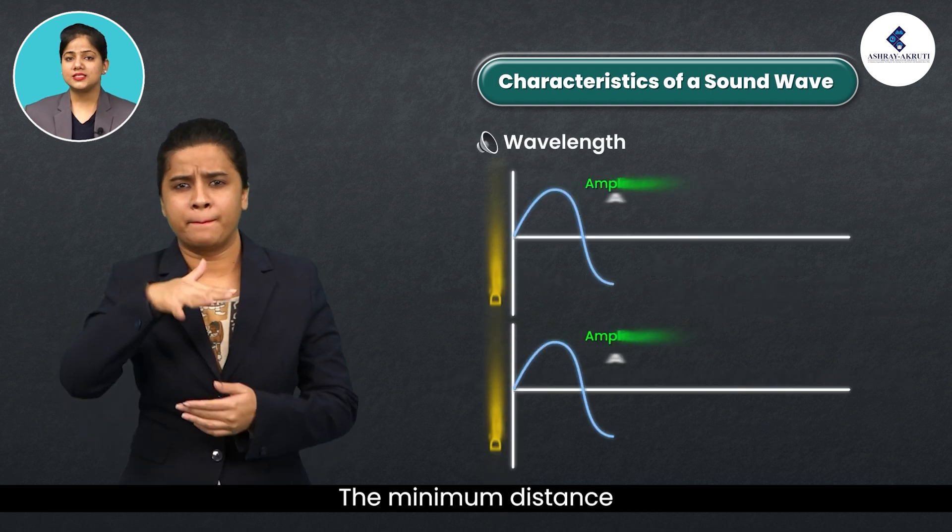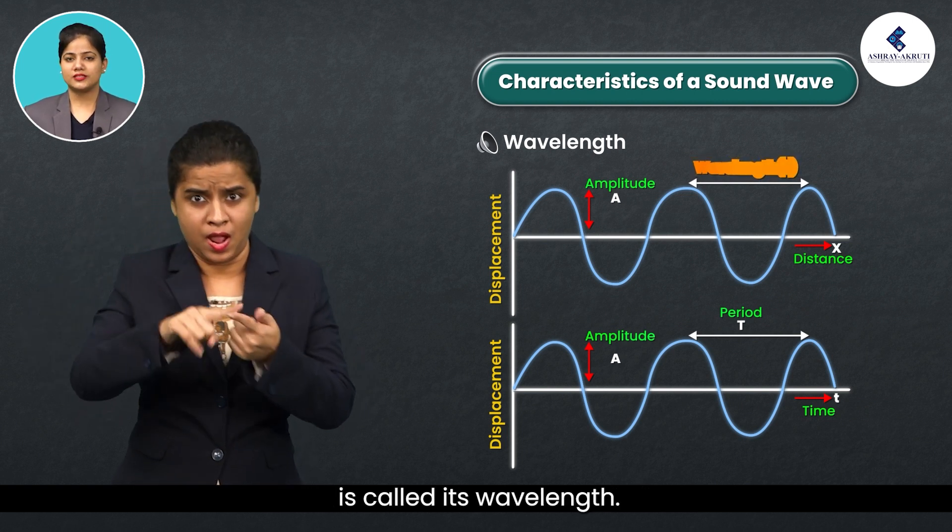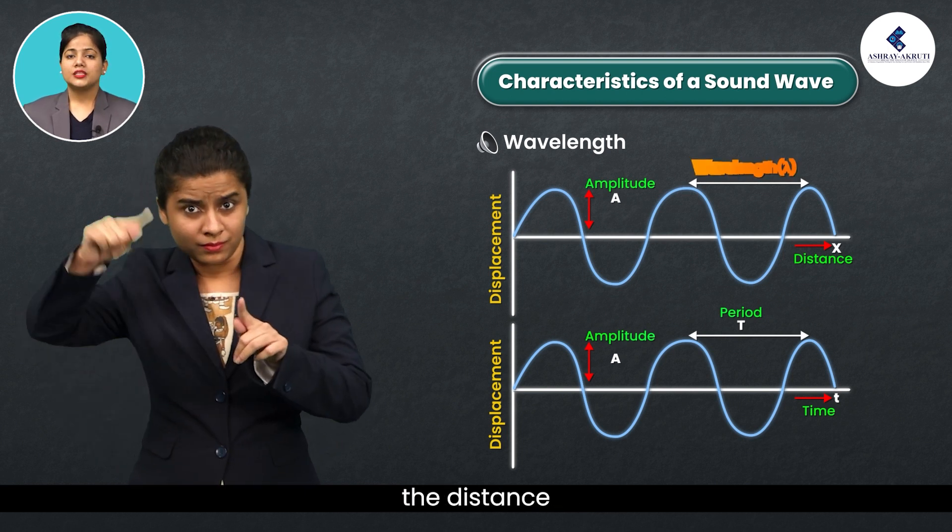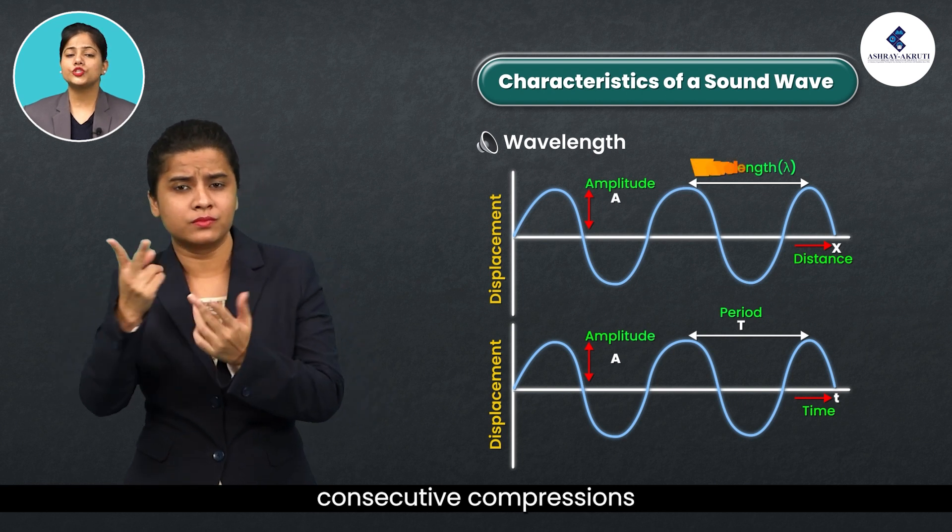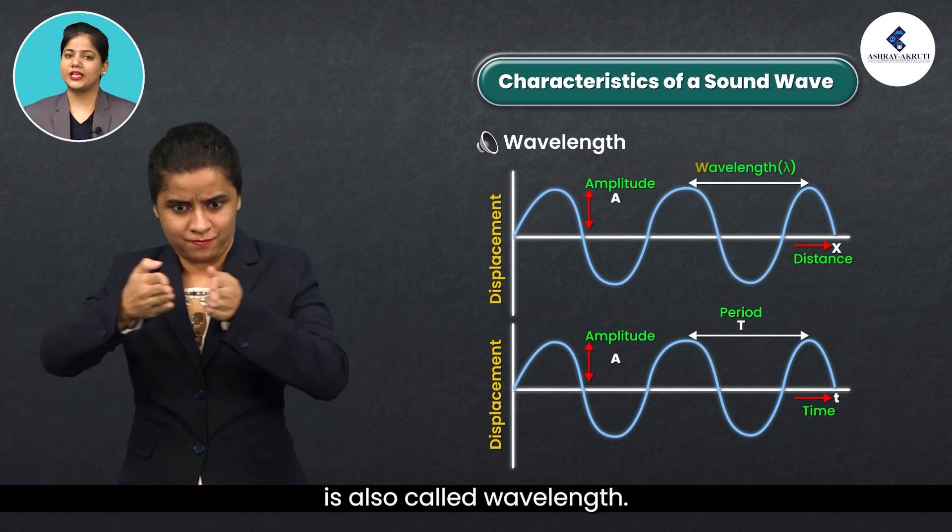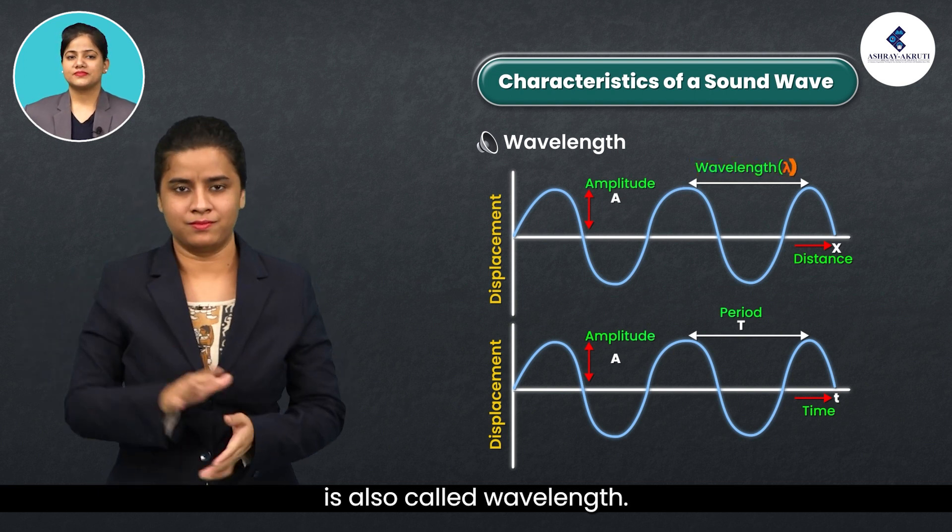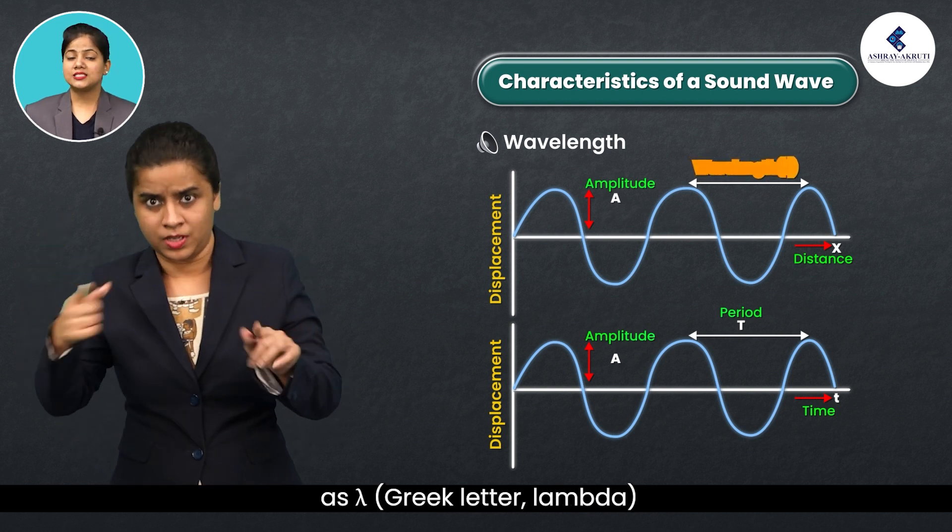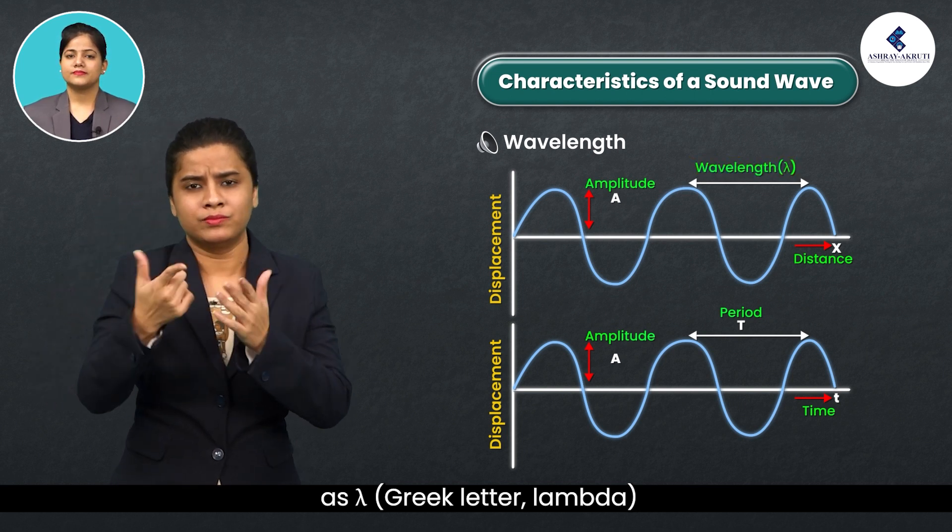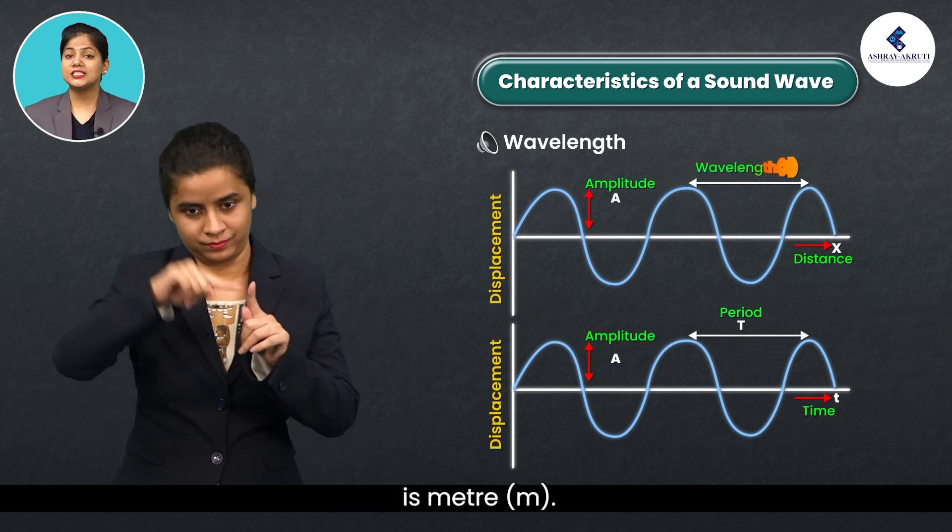The minimum distance in which a sound wave repeats itself is called its wavelength. In a sound wave, the distance between the centers of two consecutive compressions or two consecutive rarefactions is also called wavelength. The wavelength is usually denoted as lambda, Greek letter lambda. The SI unit of wavelength is meter (m).